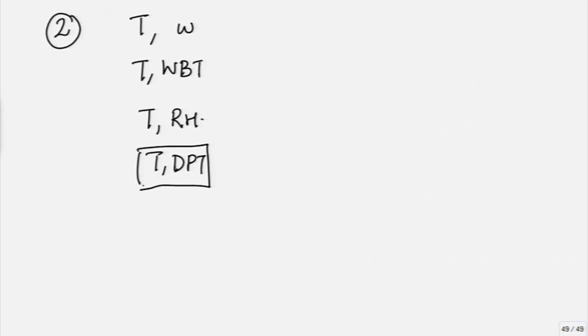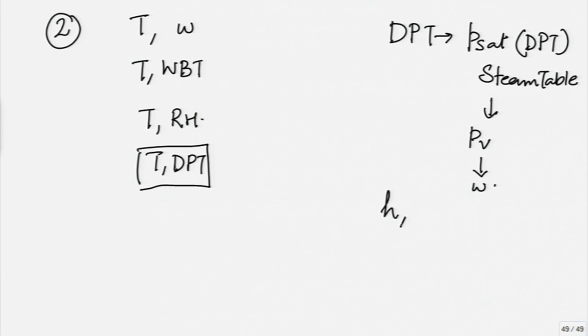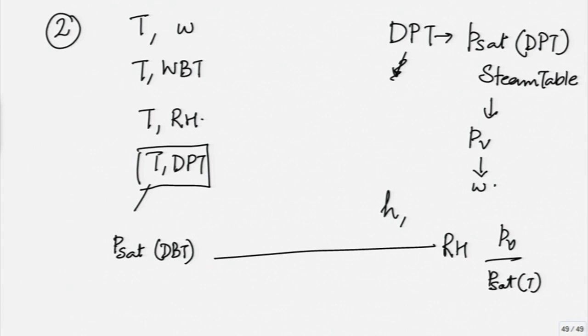The temperature given with dew point temperature is exactly the same as what we did in problem 1. I use the dew point temperature, get P sat at dew point temperature from steam table, which means I know PV, which means I know omega. Once I know omega, I can get H and dry bulb temperature, I will get the P sat at dry bulb temperature. And using this, I will calculate RH because this is just PV upon P sat at temperature. So, I get all properties that I need to calculate.